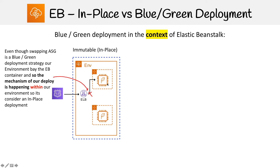Now this is interesting, because in our last slide we saw there was a blue-green methodology called ELB blue-green, and this is exactly what it did. So why isn't this considered blue-green, and it's called in-place? That has to do with the boundaries of the environment. The environment is defined here as being the Elastic Beanstalk container. Because the mechanism of our deploys is inside the boundaries of this environment, it's considered in-place.